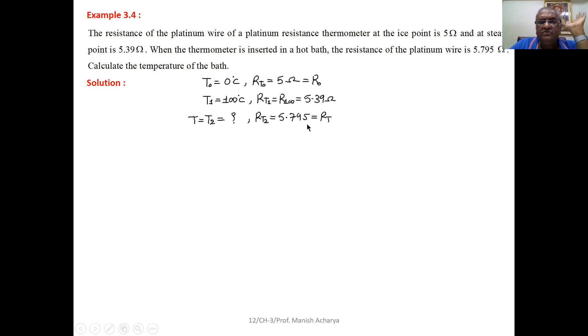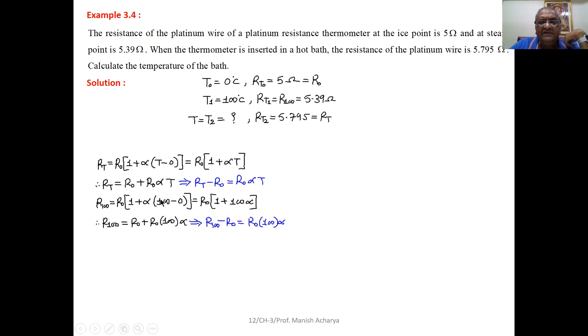Say here, alpha is not given to you, so now we can prepare the equations like this. R at any temperature T, that is R0 into 1 plus alpha T minus 0, because here the reference temperature is 0. So we can write R0 into 1 plus alpha T.